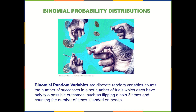We'll start by identifying a binomial random variable with the definition. Binomial random variables are discrete random variables that count the number of successes in a set number of trials, which each have only two possible outcomes — that's the 'bi' part. For example, flipping a coin three times and counting the number of times it lands on heads. They're discrete but special in that they count successes when there are only two possible outcomes per trial.